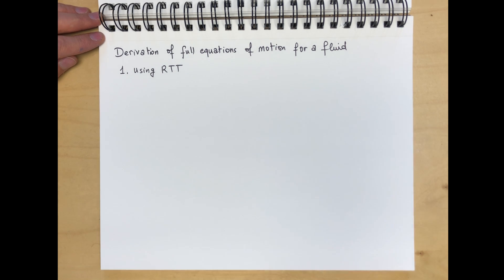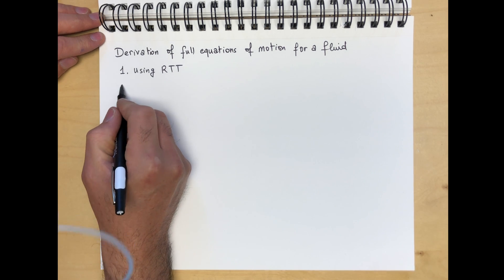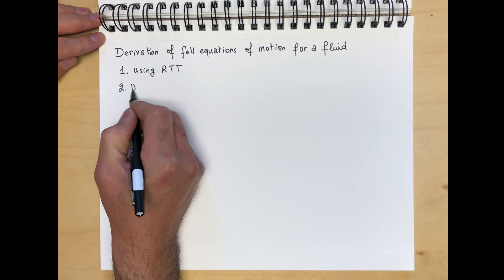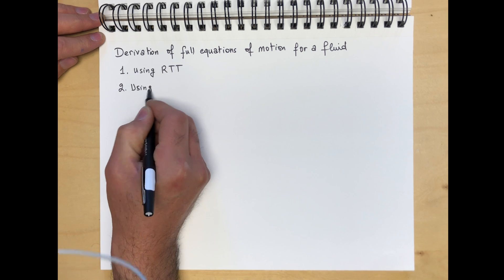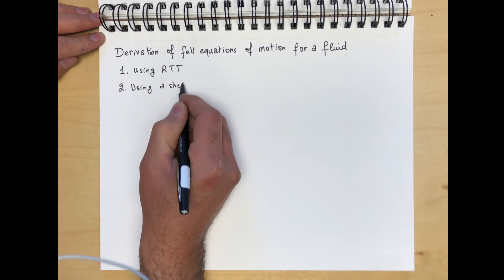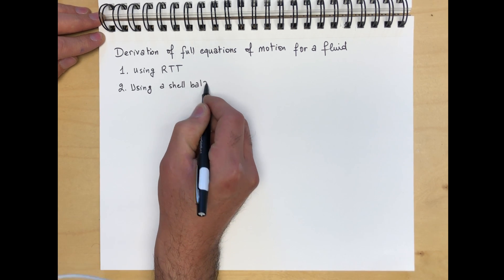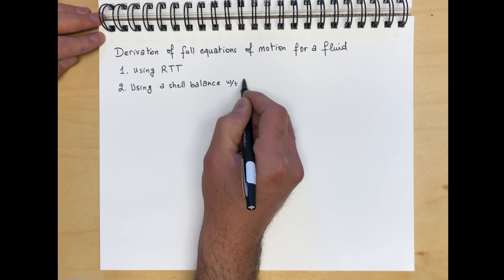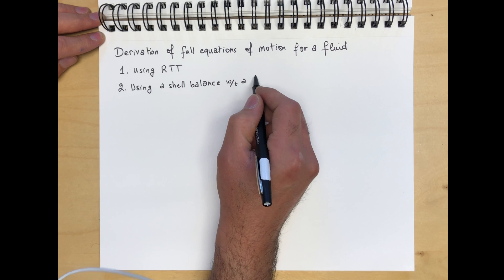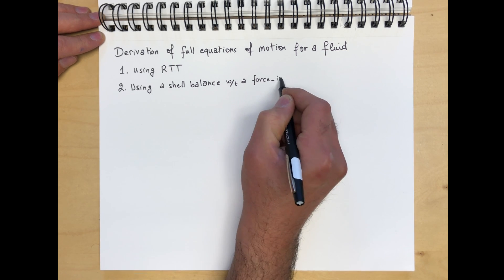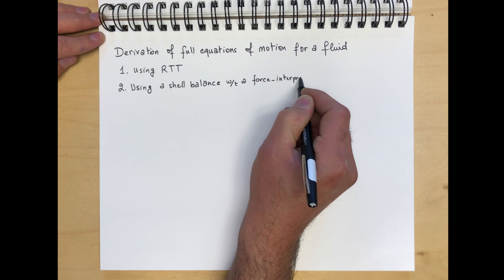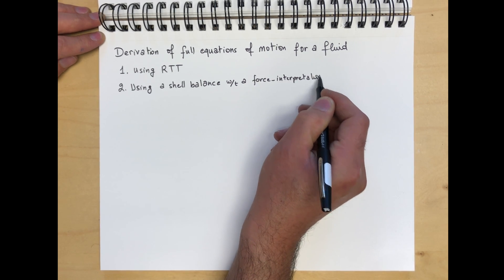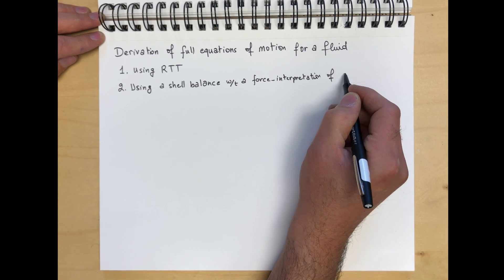We take the integrals out, and then we get the differential form. And then method two, we're going to be using a shell balance with a force interpretation, with a mechanics or force interpretation of the stress tensor.